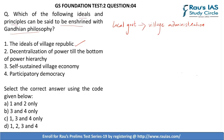Second — decentralization of power till the bottom of the power hierarchy — is also correct, as local government means people at the local level should have a say in how they are governed. Third — self-sustained village economy — is correct; at the heart of Gandhian philosophy lies the ideals of self-reliance and self-sustainment, which applied to village economy as well. Fourth — participatory democracy — is also correct. Mahatma Gandhi wanted every citizen at all levels of government to provide meaningful participation in the governance of the country.